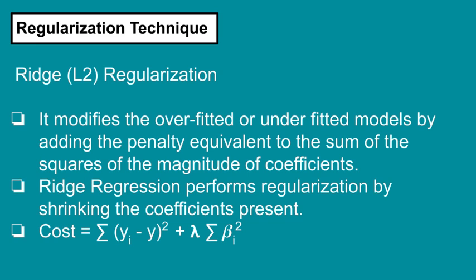In the Ridge cost function, we sum up all the residual sum of squares and add a penalty term. This penalty term is lambda multiplied by the sum of squared model coefficients. The penalty term — also called the shrinkage penalty — will be small only if the coefficients are small, close to zero. While fitting the Ridge regression model, since we minimize the entire cost (RSS plus penalty), it has the effect of shrinking the model coefficients (beta) towards zero. If lambda is zero, the cost function contains no penalty term and there is no shrinkage — the result is the same as OLS.